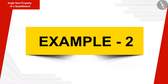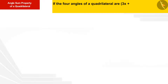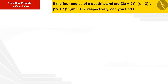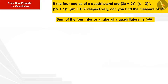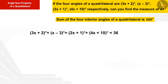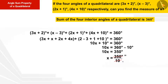Another example: the four angles of a quadrilateral are 3x + 2°, x − 3°, 2x + 1°, and 4x + 10° respectively. Find the measure of x. Since the sum of the four interior angles is 360 degrees: (3x + 2) + (x − 3) + (2x + 1) + (4x + 10) = 360. Solving gives x = 35 degrees.